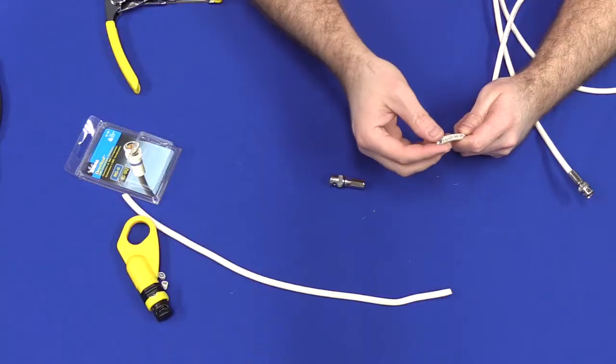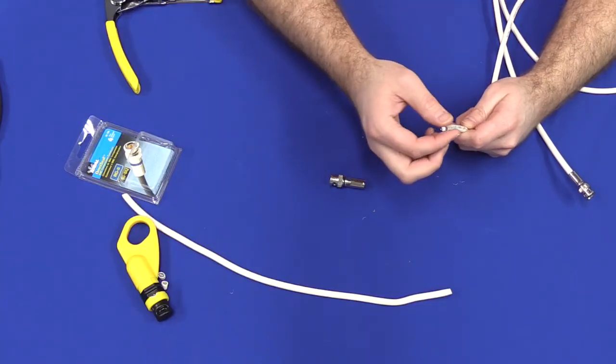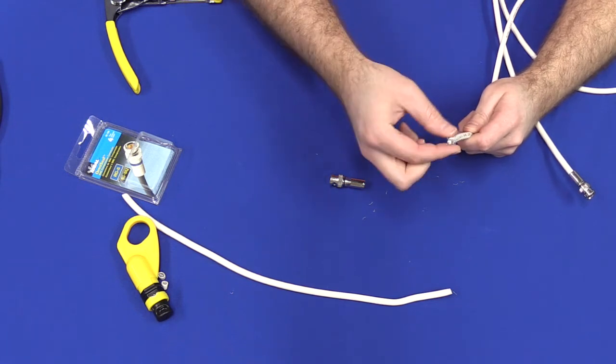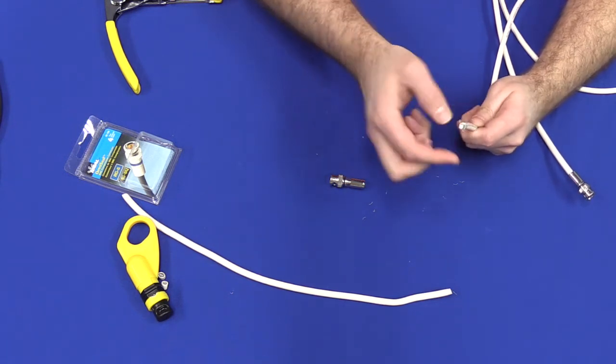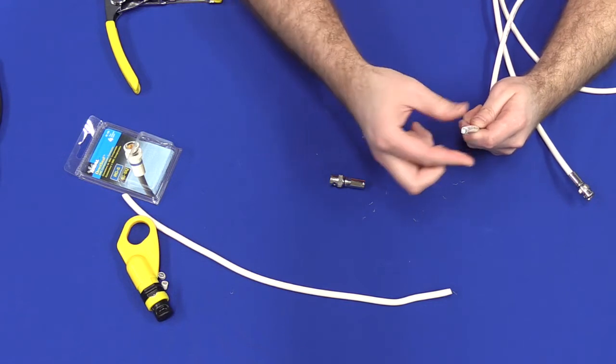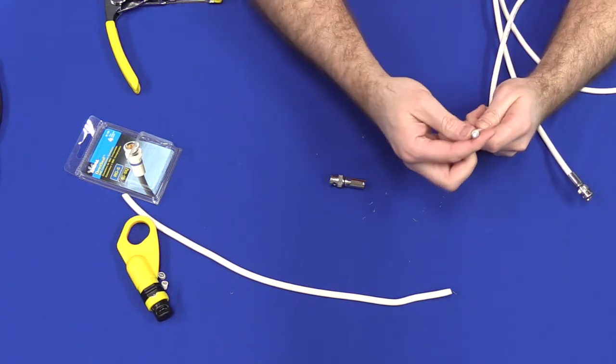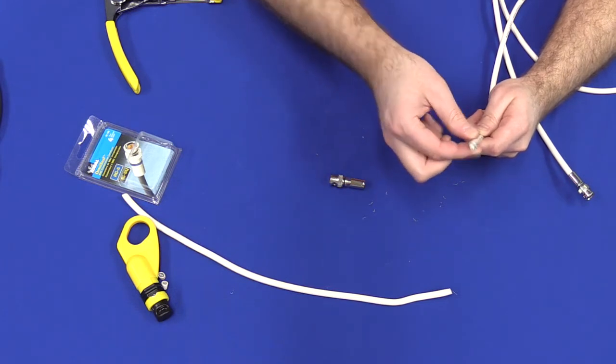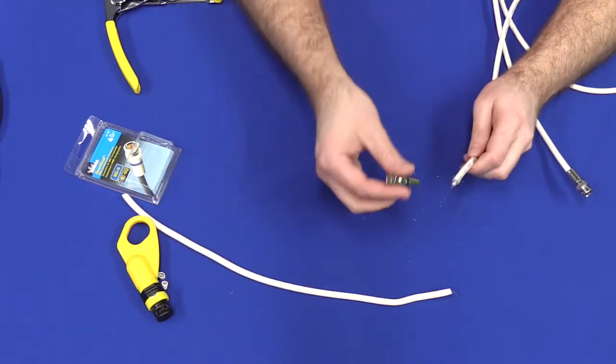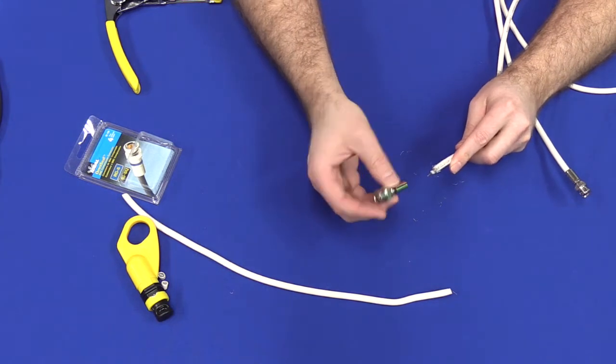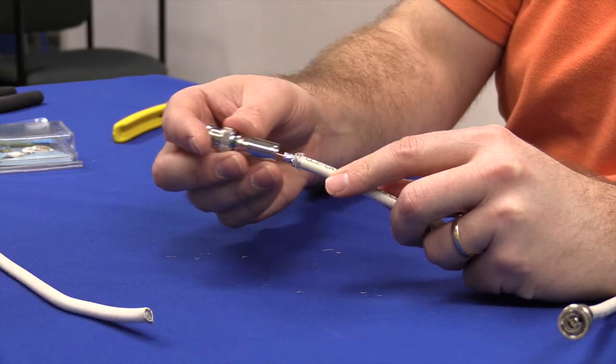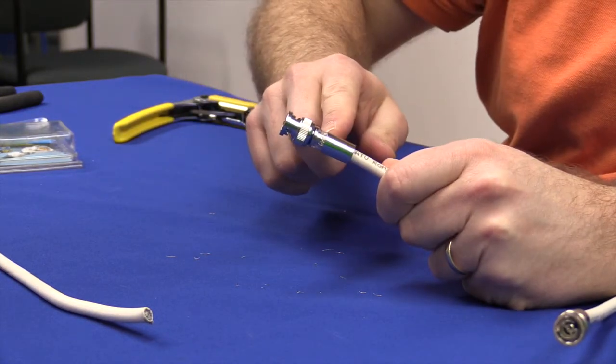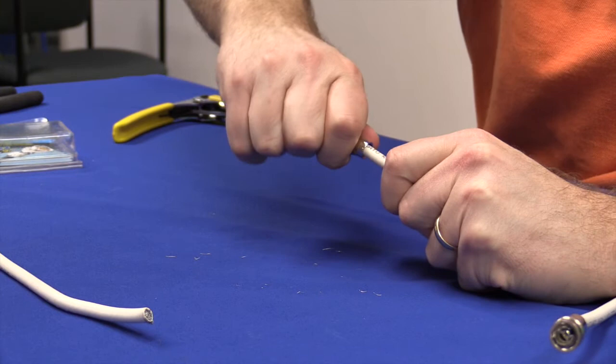I then peel back the small wires that act as the extra insulation. If your cable does not have small wires, do not peel back just the foil. Leave the foil there. You're going to then take the BNC connector, the British Naval Connector. You're going to slide it on, getting the casing to go all the way in.